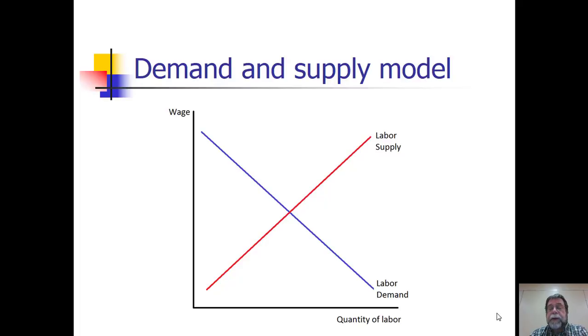The simplest model of the labor market is one you saw in your principles of microeconomics course, the model of demand and supply. In a very simple form here, the demand for labor comes from firms who hire workers. And the basic principle illustrated here is that firms will hire more workers if they don't have to pay them as much. So the lower the wage, the larger the quantity of labor demanded.